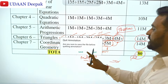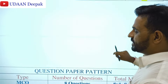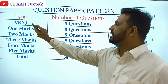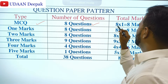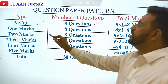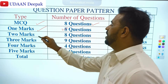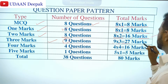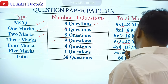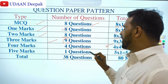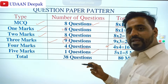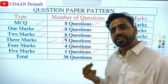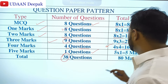Total marks is 80. The question paper pattern is similar to that of Science. You will get 8 MCQs (8 marks), 8 one-mark questions (8 marks), 8 two-mark questions (16 marks), 9 three-mark questions (27 marks — highest), 4 four-mark questions, and 1 five-mark question. In the 4-mark section, a theorem is fixed. The 5-mark question — 90% from triangles — will be either Thales' theorem or AAA theorem. Total: 38 questions for 80 marks.